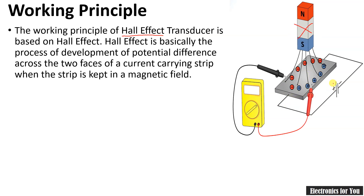Let us assume that some supply is applied to the two terminals of this strip. In normal condition, current will start flowing through it. If we want to measure the output voltage between these two terminals in the normal case, we will get zero output voltage, because the whole current will pass through it and the same EMF will exist on both sides.